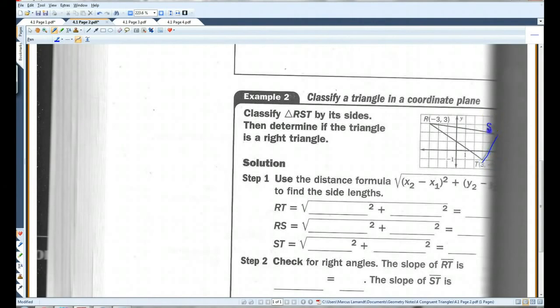This is S and this, let's see here, it's 5,2 and then T, 3, negative 1. Okay. So, first thing we need to do, we need to use the distance formula to figure out how long these sides are. Let's take a look at RT. That's this side here.